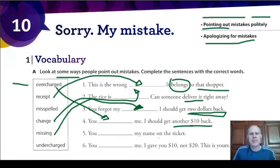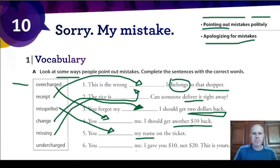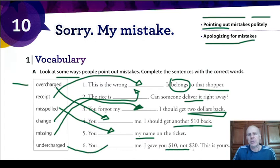You misspelled my name on the ticket. Name is misspelled — you didn't write my name correctly. And then it's misspelled. The only one left is undercharged: 'I gave you ten, not twenty. This is yours.' So the person is giving more change than they should — you undercharged me.